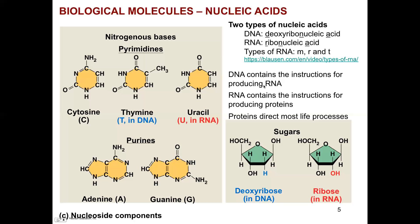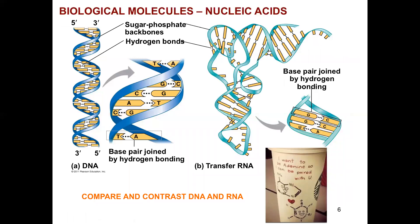DNA contains the instructions for producing RNA. RNA contains the instructions for producing proteins, and proteins then direct most life processes. Remember there are three types of RNA, which we'll go over. With DNA you have the double helix — two separate strands joined anti-parallel, with the five prime end pairing with the three prime end. In RNA, there is hydrogen bonding between pairs but with U instead of T, and it's a single strand folding on itself producing a structure — this particular example is transfer RNA.